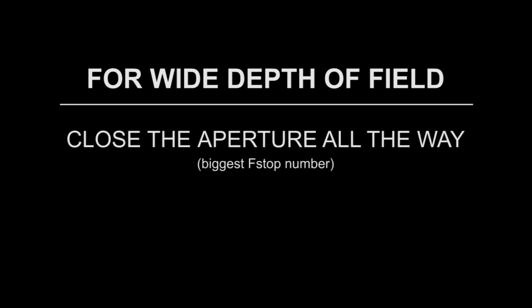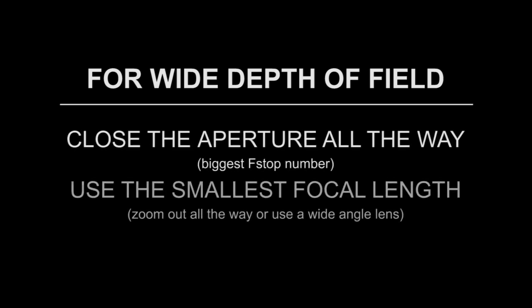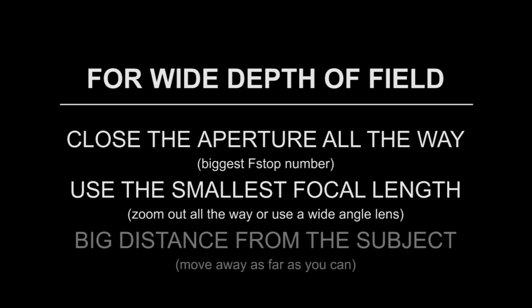Now, if you want to get a wide depth of field, then you should have the aperture closed as much as you can. You should also use a small focal length lens and zoom out as much as you can. Or if you're using prime lenses, then use the widest available lens you have, like a 16mm or 24mm wide angle lens. You should also be as far away from the subject as possible. It doesn't mean that you have to do all three of these things — sometimes just doing one or two of these changes is enough.